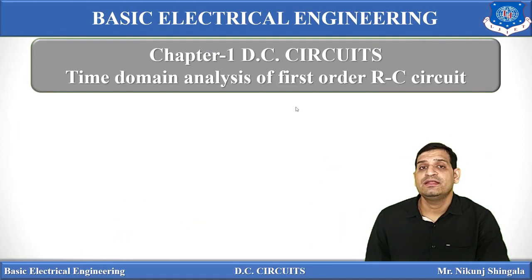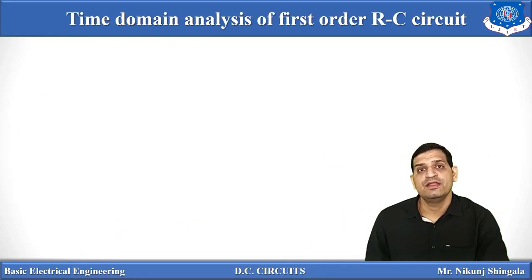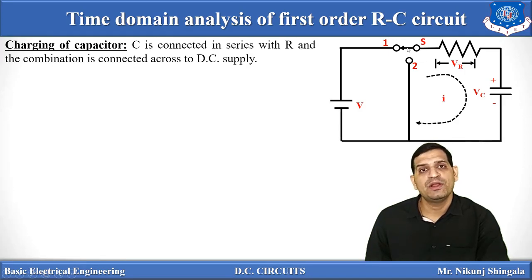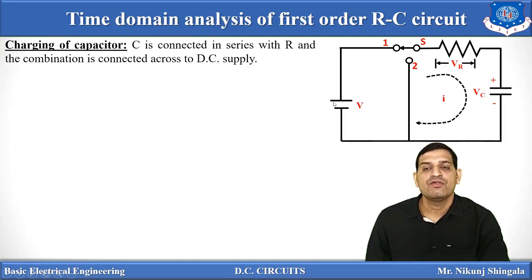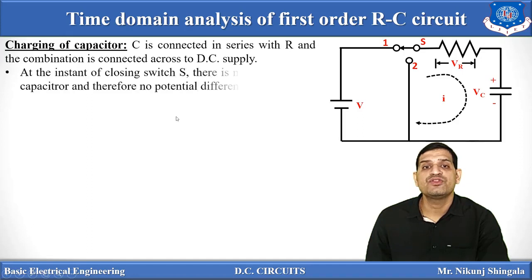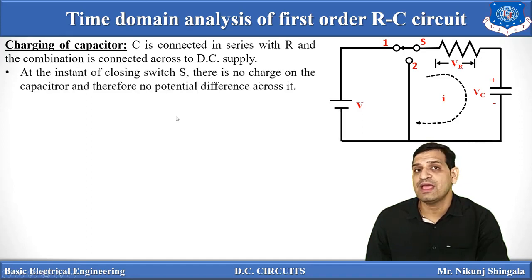So here you can see one circuit with a switch having two positions. Initially, assume the switch is not closed — it is in open condition. The circuit consists of two elements, resistor and capacitor, both connected in series. This series combination is connected across a DC supply, so this circuit is analyzed under DC condition. As initially the switch is not closed, no current will flow, there is no charge on the capacitor, and hence no potential difference across it.